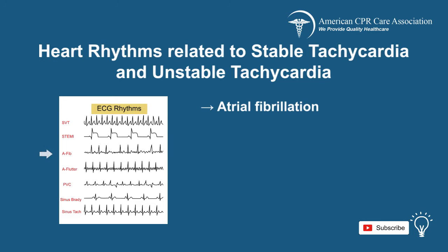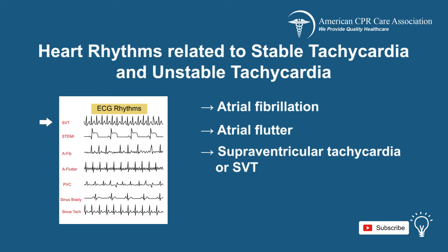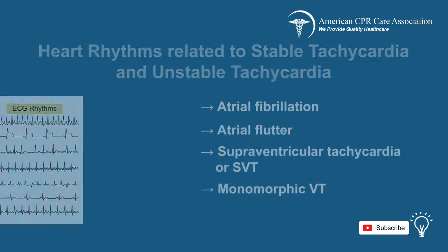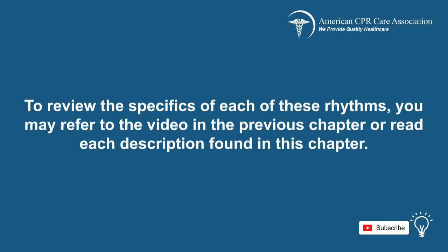Atrial fibrillation, atrial flutter, supraventricular tachycardia or SVT, monomorphic VT, and polymorphic VT. To review the specifics of each of these rhythms, you may refer to the video in the previous chapter or read each description found in this chapter.